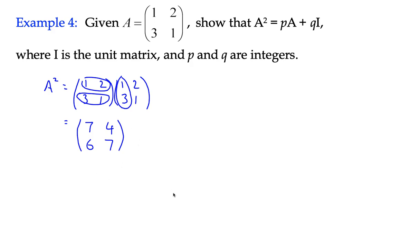So what we want to do is to show that we can somehow get an equivalent from looking at a multiple of the original matrix A plus QI. So what would that look like? We need to think about PA plus QI. What would that look like? Well, we know that matrix A is 1, 2, 3, 1, and we're going to multiply that by P, and we know that I is the unit matrix 1, 0, 0, 1.